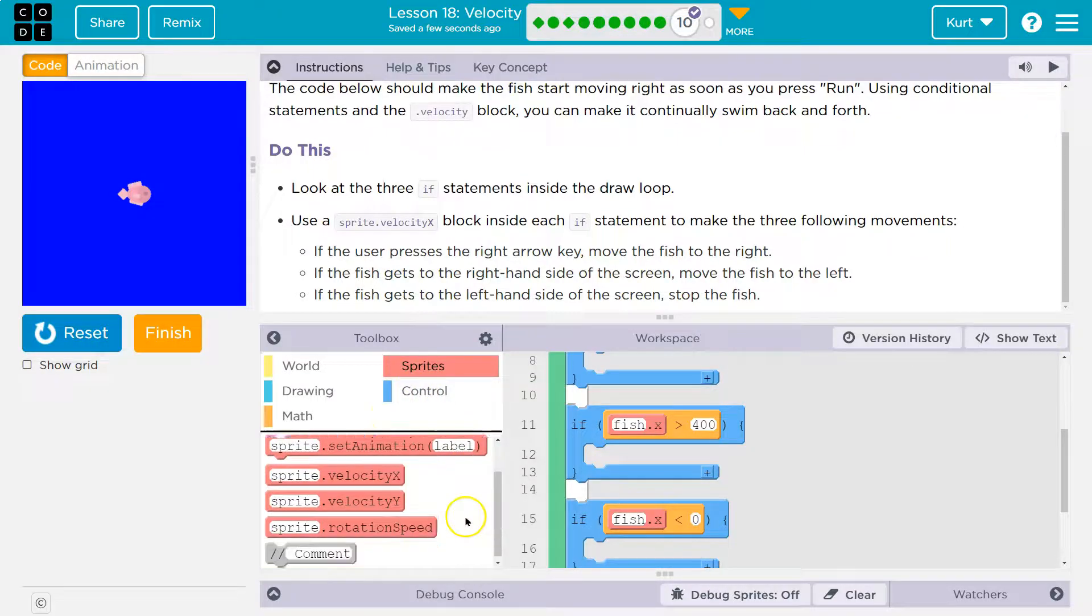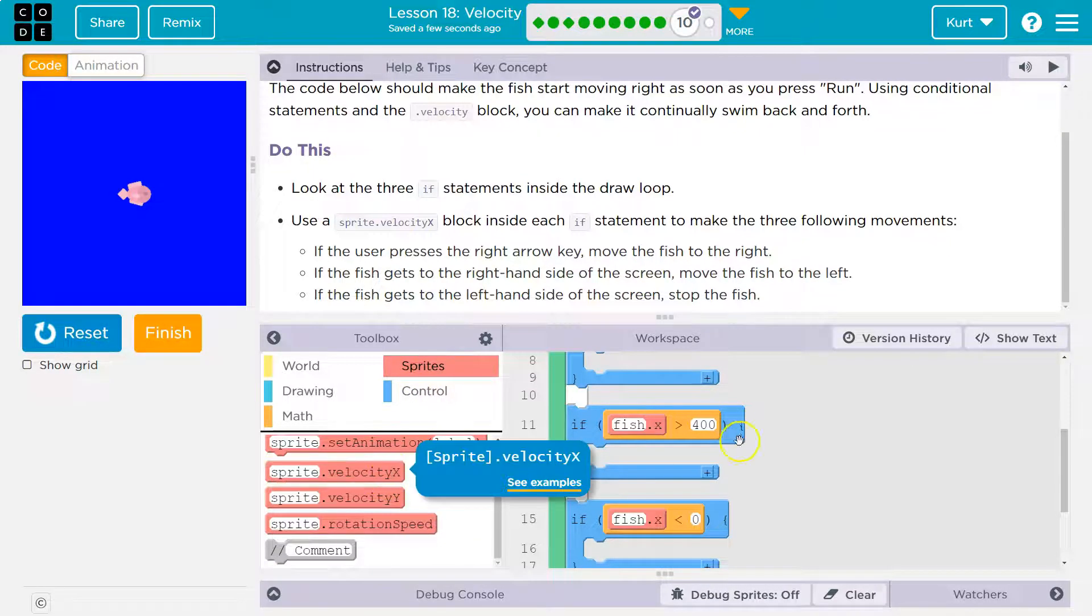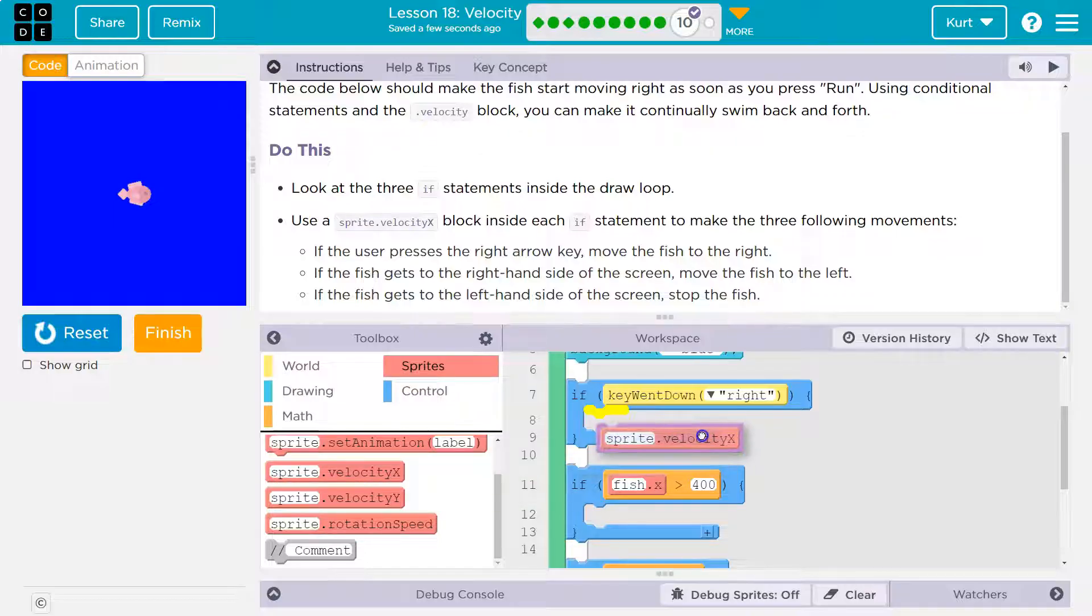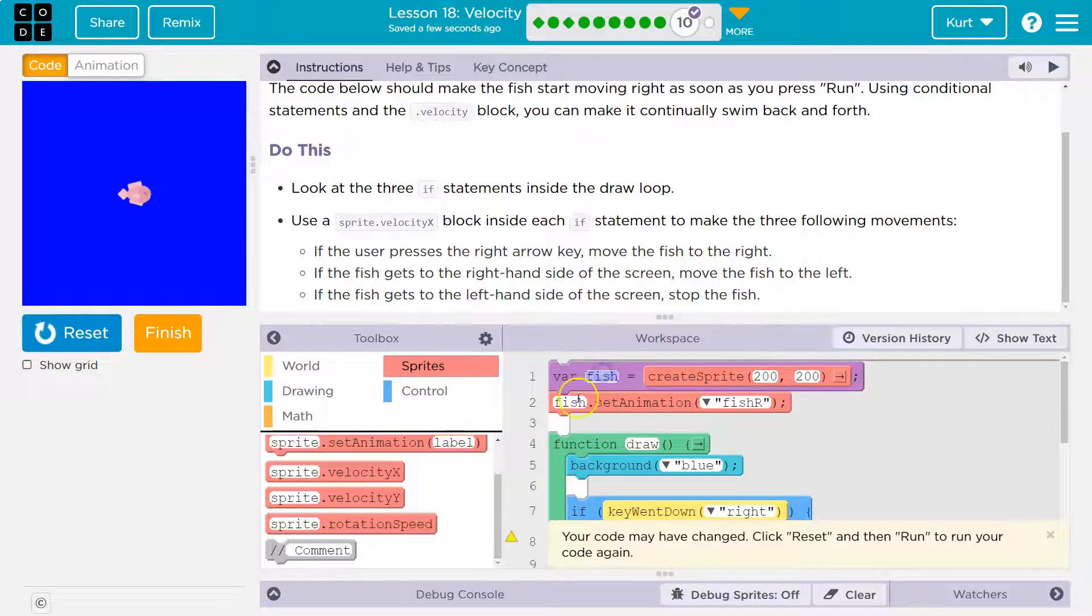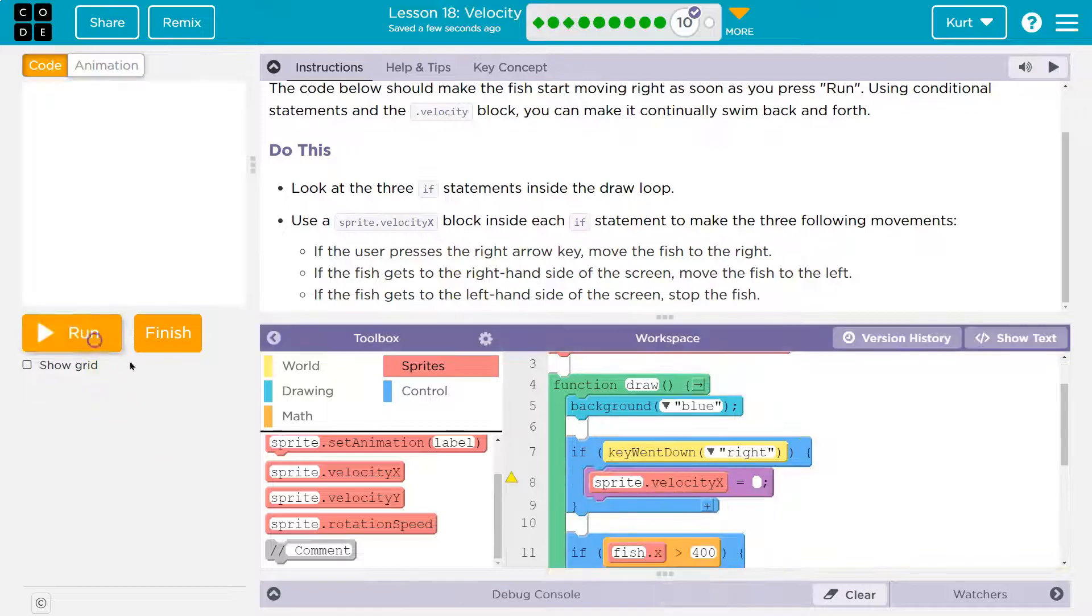So let me go to sprites and grab sprite.velocityX because we named our fish, our sprite fish, right? Our variable is fish. It's not sprite. I can hit reset so that stuff isn't bugging me. So I need to make this say fish.